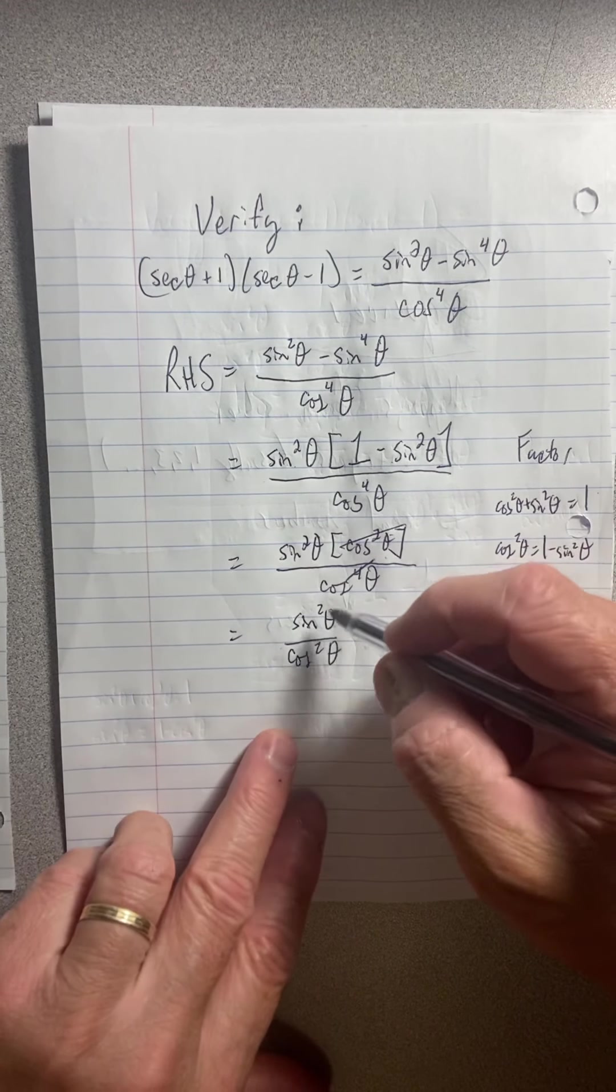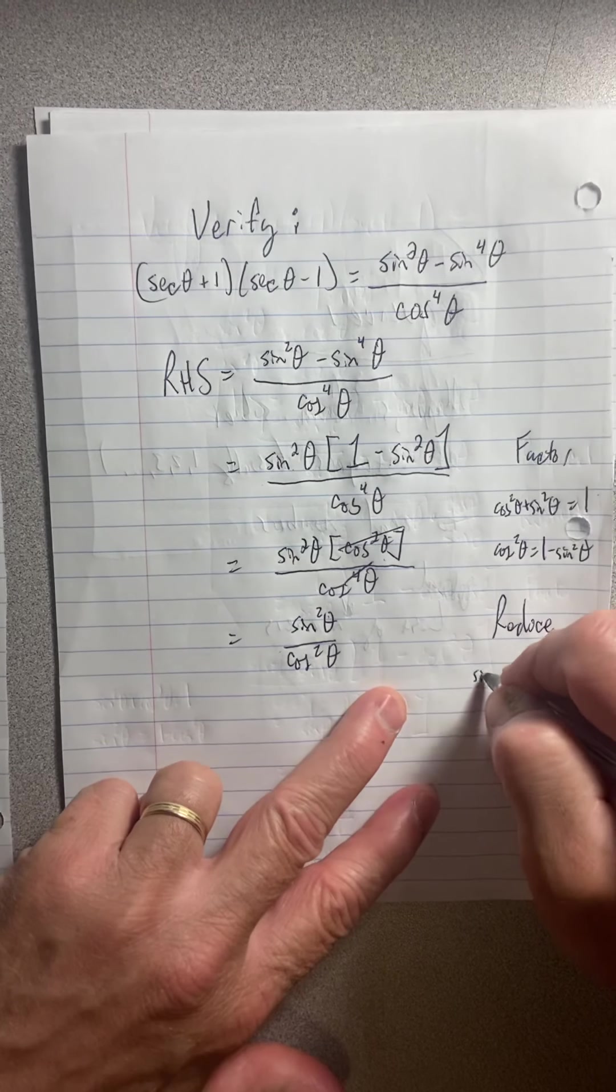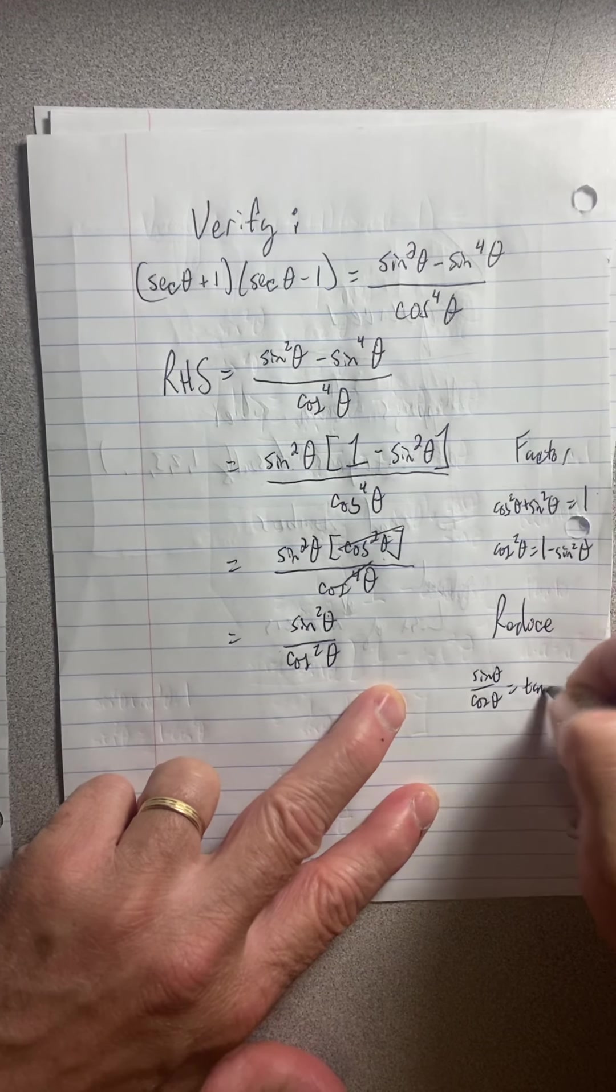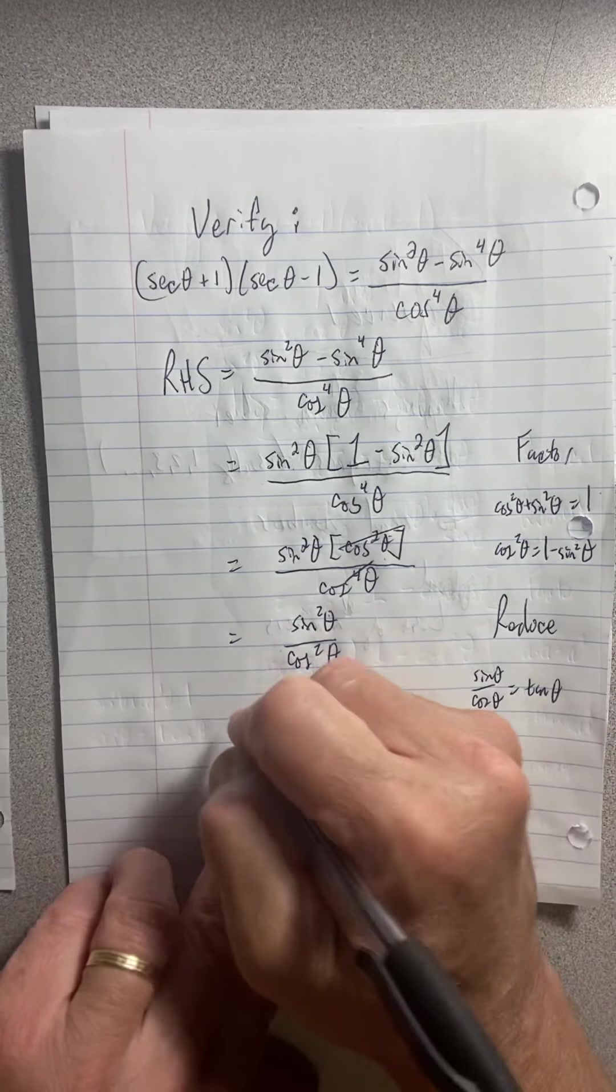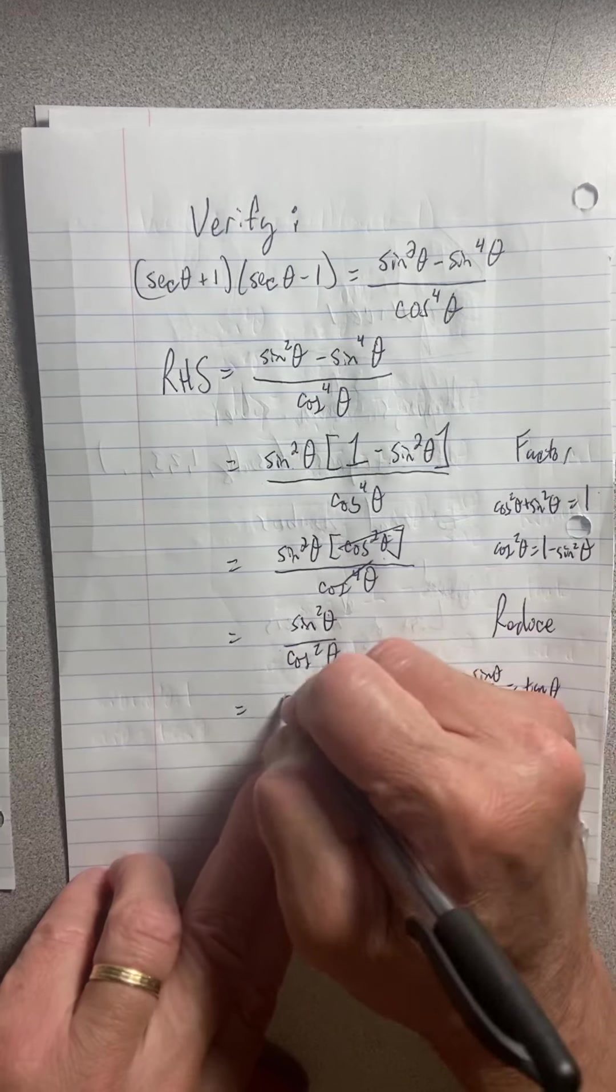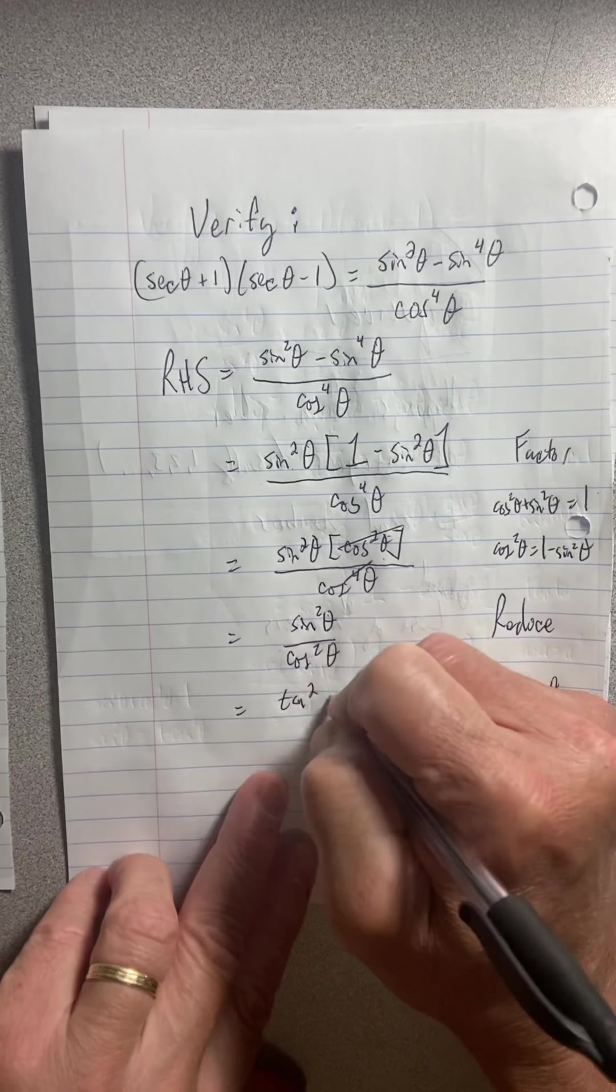Well this is clearly sine over cosine. Remember sine over cosine by the quotient identity is tangent theta. So I could have just wrote quotient identity. Hopefully we know the names of the basics by now. So this is tangent squared theta.